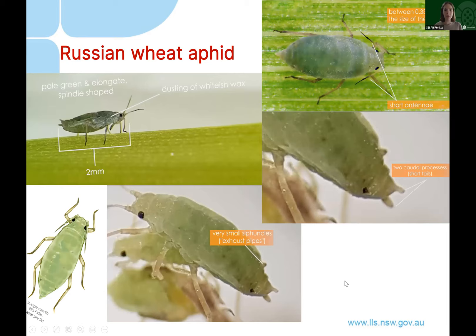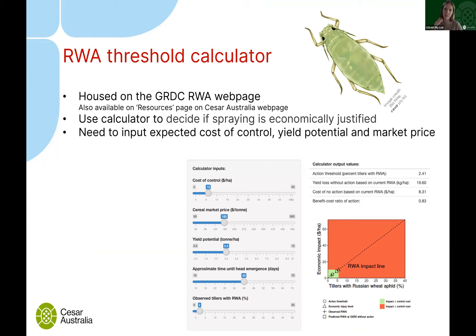Russian wheat aphid, which many of you may have come across, has much shorter antennae with little black tips. They have that spindle-shaped body and very small siphuncles compared to the other two. They often have a kind of dusting of wax — a white waxy substance on them as well.